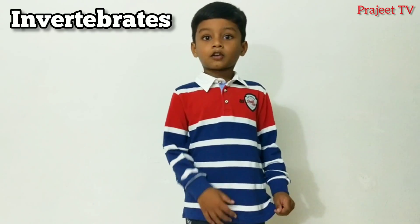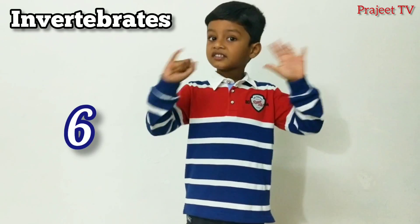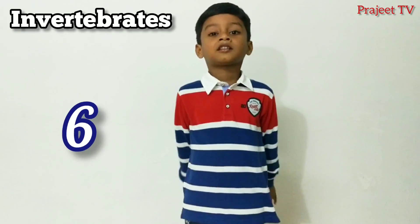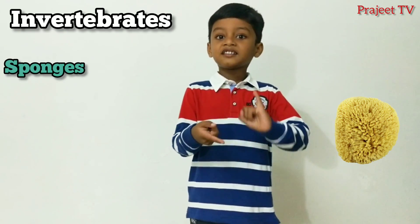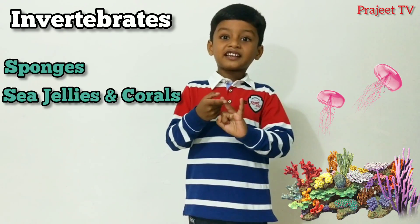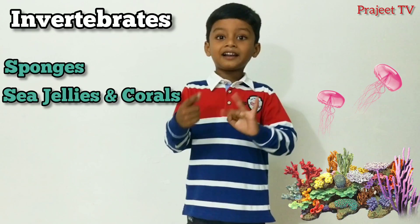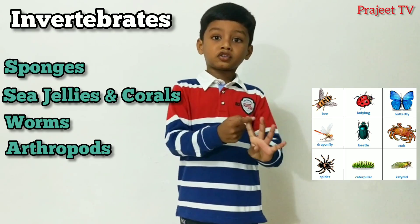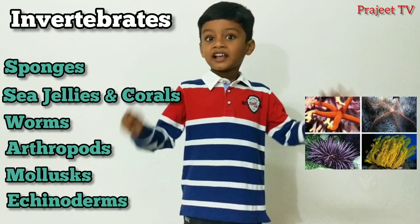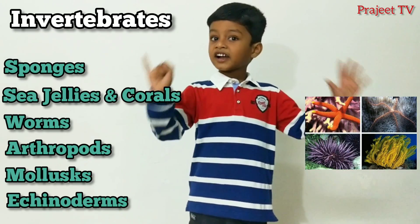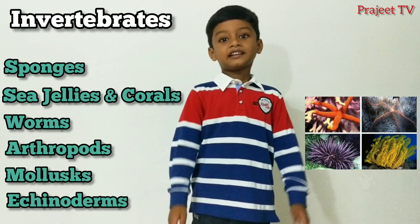Invertebrates are classified into six groups. They are sponges, sea jellies and corals, worms, arthropods, molluscs, and echinoderms.